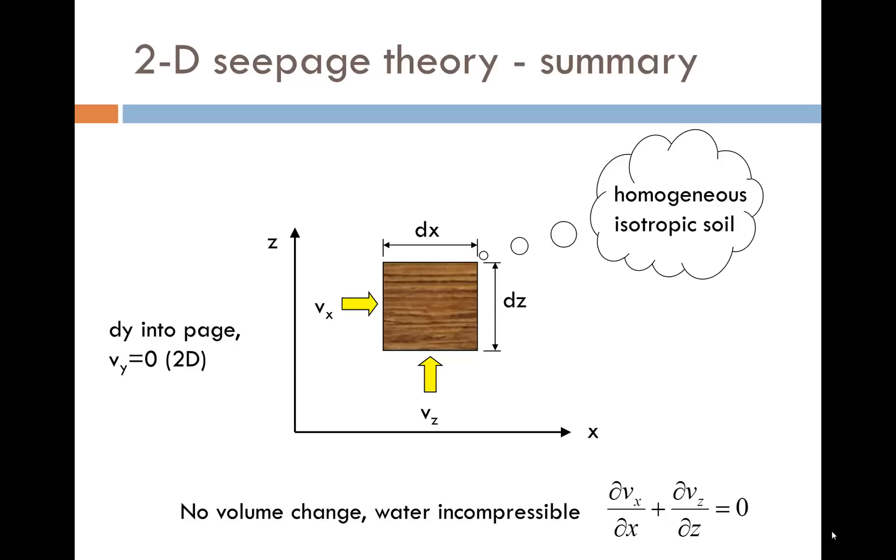We can apply some maths to two-dimensional seepage theory. Our starting point is to consider two-dimensional flow through an element of soil with dimensions dx and dz in the plane of flow. The velocity in the x direction is vx, while the velocity in the z direction is vz.